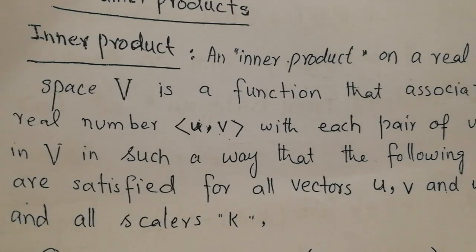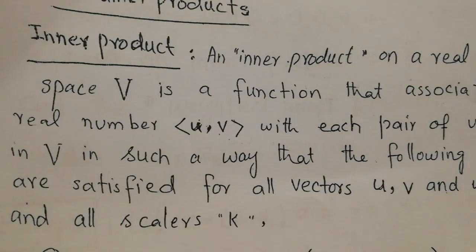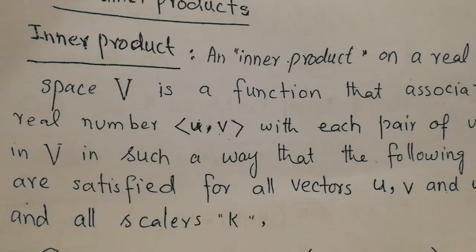In this particular lecture, I would explain why do we call a particular type of product an inner product. In vectors, we have two types of products: dot product and cross product. The dot product is called inner product, but we do not call the cross product the inner product. In this video, we would learn why that is so.